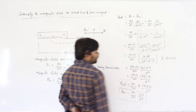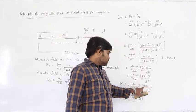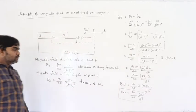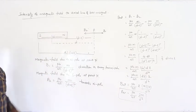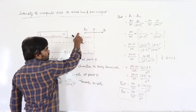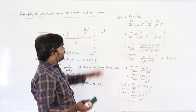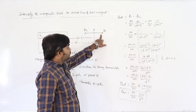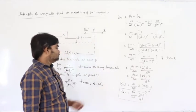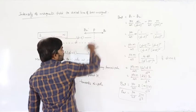Here capital M is the magnetic moment, defined as pole strength times length. The formula is B = μ₀/4π × 2M/d³. The direction of B_net is away from the north pole (direction of B₁), which is also the direction of the magnetic moment (south to north inside the magnet).